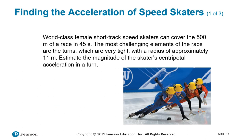World-class female short track speed skaters can cover the 500 meters of a race in 45 seconds. What did they just give you? They gave you 500 meters in 45 seconds. Well, what has units of meters per second? That's velocity. So they just told you what the velocity is, 500 divided by 45. Then it gives you a radius of approximately 11 meters. Wow, this is going to be easy. Estimate the magnitude of the skater's centripetal acceleration in a turn. And we all know that the centripetal acceleration is V squared over R.